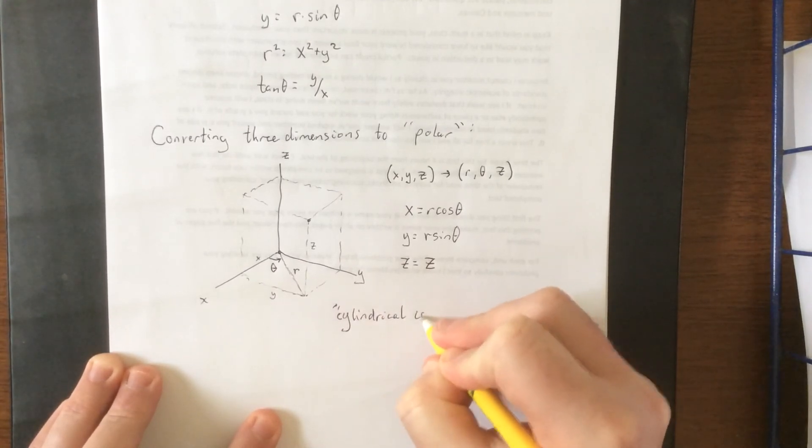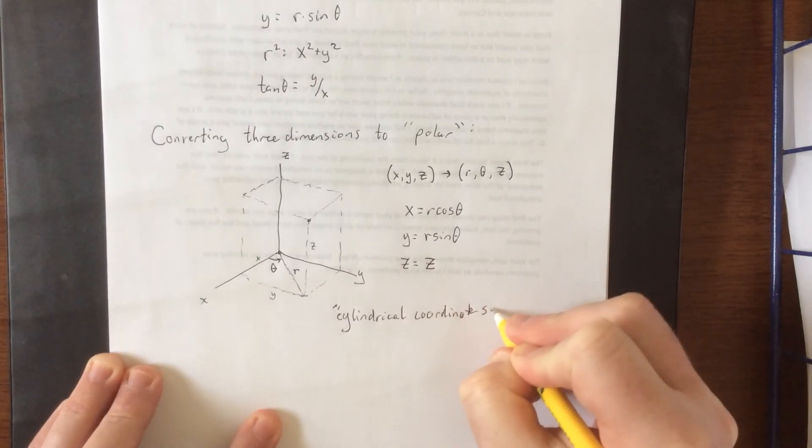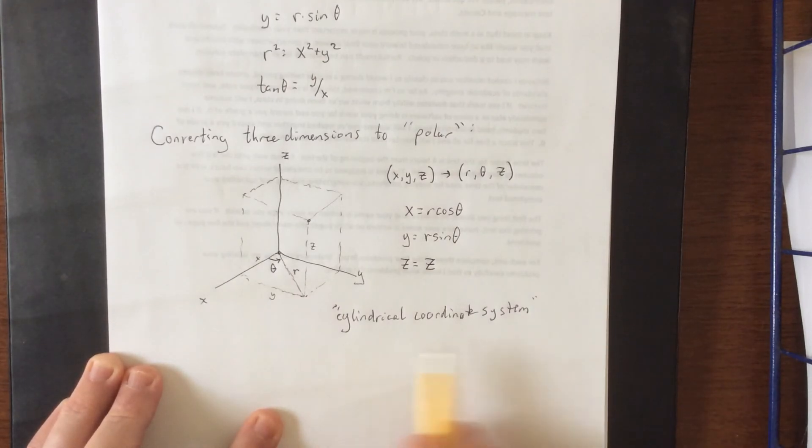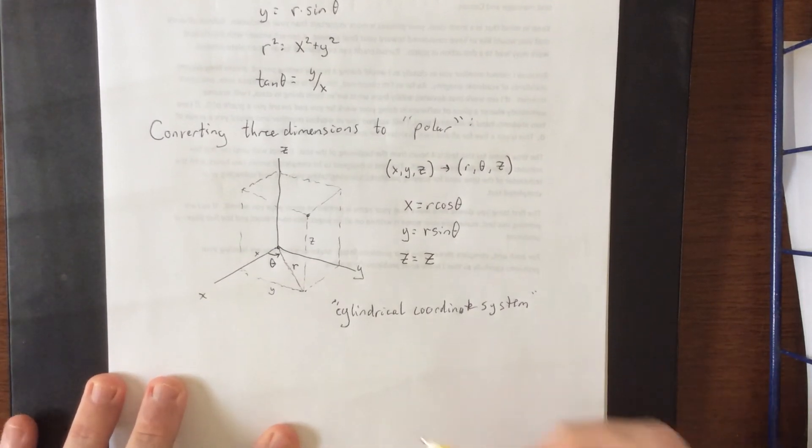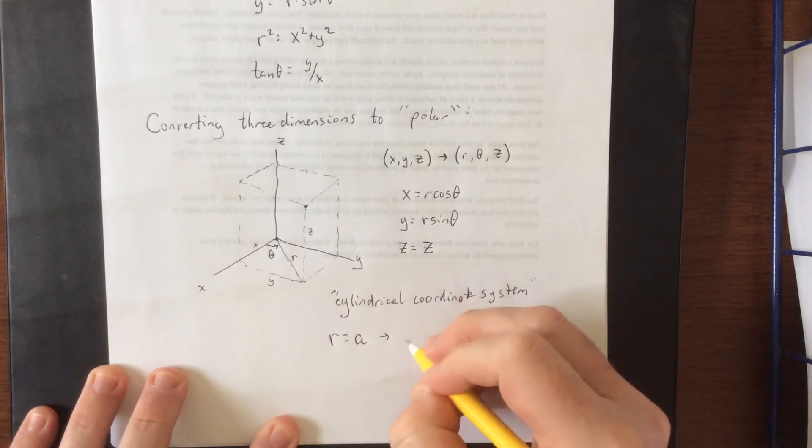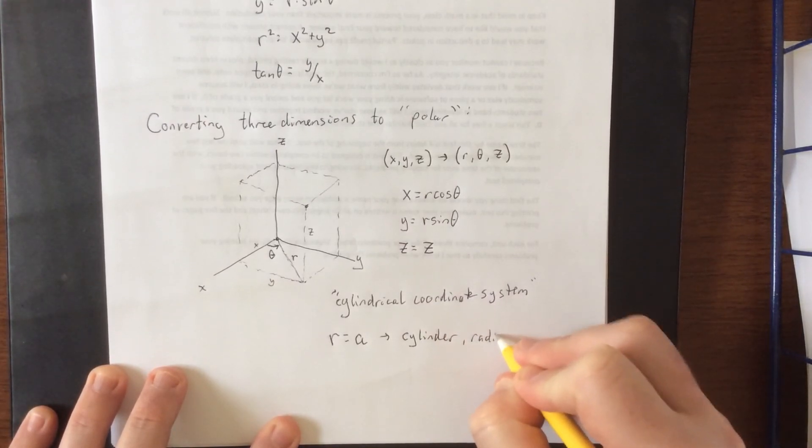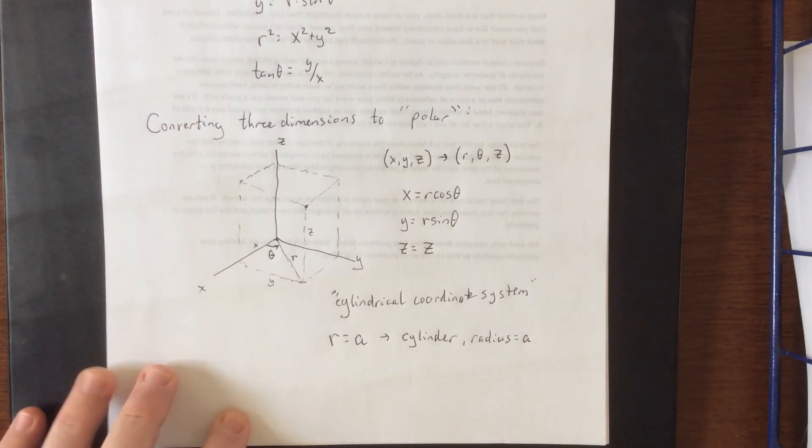We refer to this as the cylindrical coordinate system. Cylindrical coordinate system. Sorry, my handwriting is really sloppy today for some reason. But yeah, cylindrical coordinate system, because if we have r equals a constant, we'll refer to this as a, this would be a right circular cylinder, with a radius equal to a.